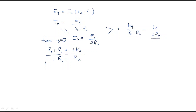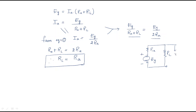From this we get finally the RL value equals RA. So we understand that the load resistance must be equal to the armature resistance. Generally, EG has negative and positive terminals, the armature has some armature resistance, and it transfers to the load resistance RL. Whenever the load resistance equals the armature (source) resistance, the maximum power condition is satisfied.